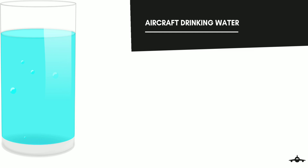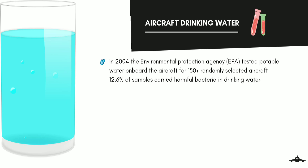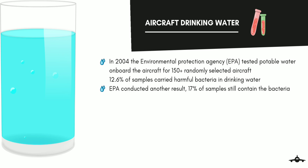There are several problems with the drinking water provided on the aircraft. In 2004, the Environmental Protection Agency tested portable water on board more than 150 randomly selected aircraft. It turns out that every 8th aircraft carried harmful bacteria in their drinking water. These results were shared with the airlines, and EPA conducted the same test again that year — the results were very unlikely, as almost 17% of the samples still contained harmful bacteria.